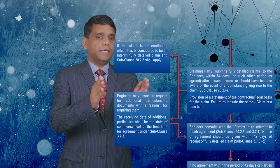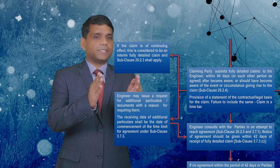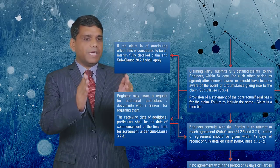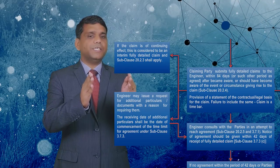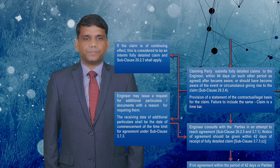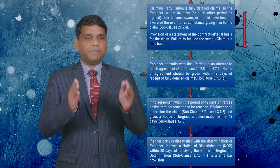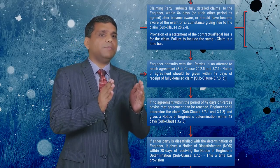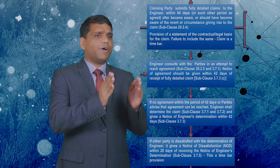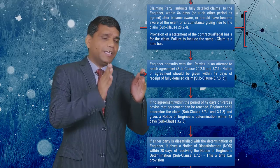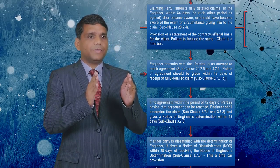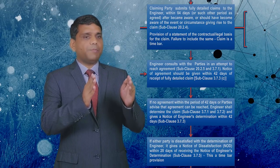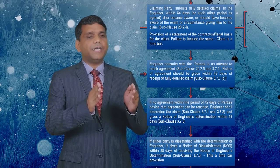Upon receiving a fully detailed claim, the engineer may issue a request for additional particulars and documents with reasons for requiring them. The receiving date of these additional particulars shall be the date of commencement of the time limit for agreement under sub-clause 3.7.3. Upon receiving the additional or fully detailed particulars, the engineer consults with the parties in an attempt to reach agreement pursuant to sub-clause 20.2.5 and 3.7.1. If agreement is reached, the engineer issues a notice of agreement. If no agreement is reached within 42 days, or parties advise that agreement cannot be reached, the engineer shall determine the claim.